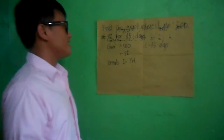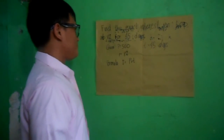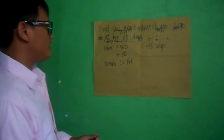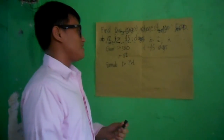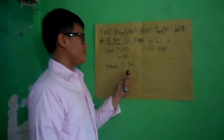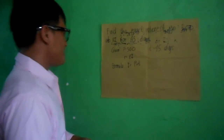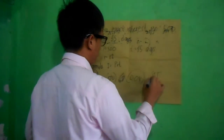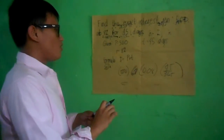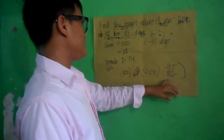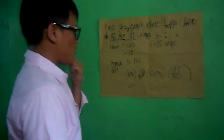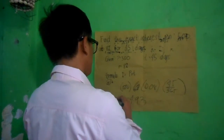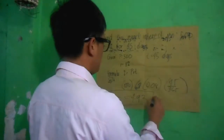Sixth problem: Find the exact interest on 500 at 8% for 45 days. Given: Principal equals 500; Rate is 8%; Time is 45 days. Using the formula I equals P times R times T, and since this is exact interest, we divide by 365. Multiplying the three values gives an exact interest of 4.93.